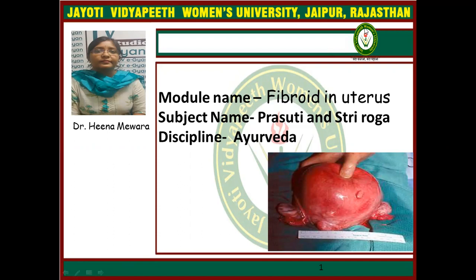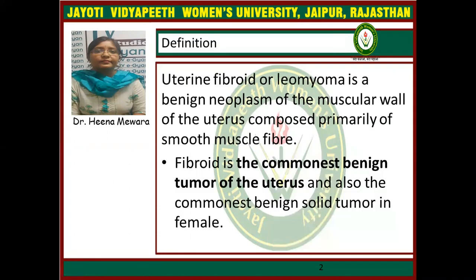In today's session I am going to discuss about fibroid in the uterus. Uterine fibroid is also called leiomyoma, myoma, or fibromyoma. It is a benign neoplasm of the muscular wall of the uterus, composed primarily of smooth muscle fibers. The fibroid is the commonest benign tumor of the uterus and also the commonest benign solid tumor in humans.